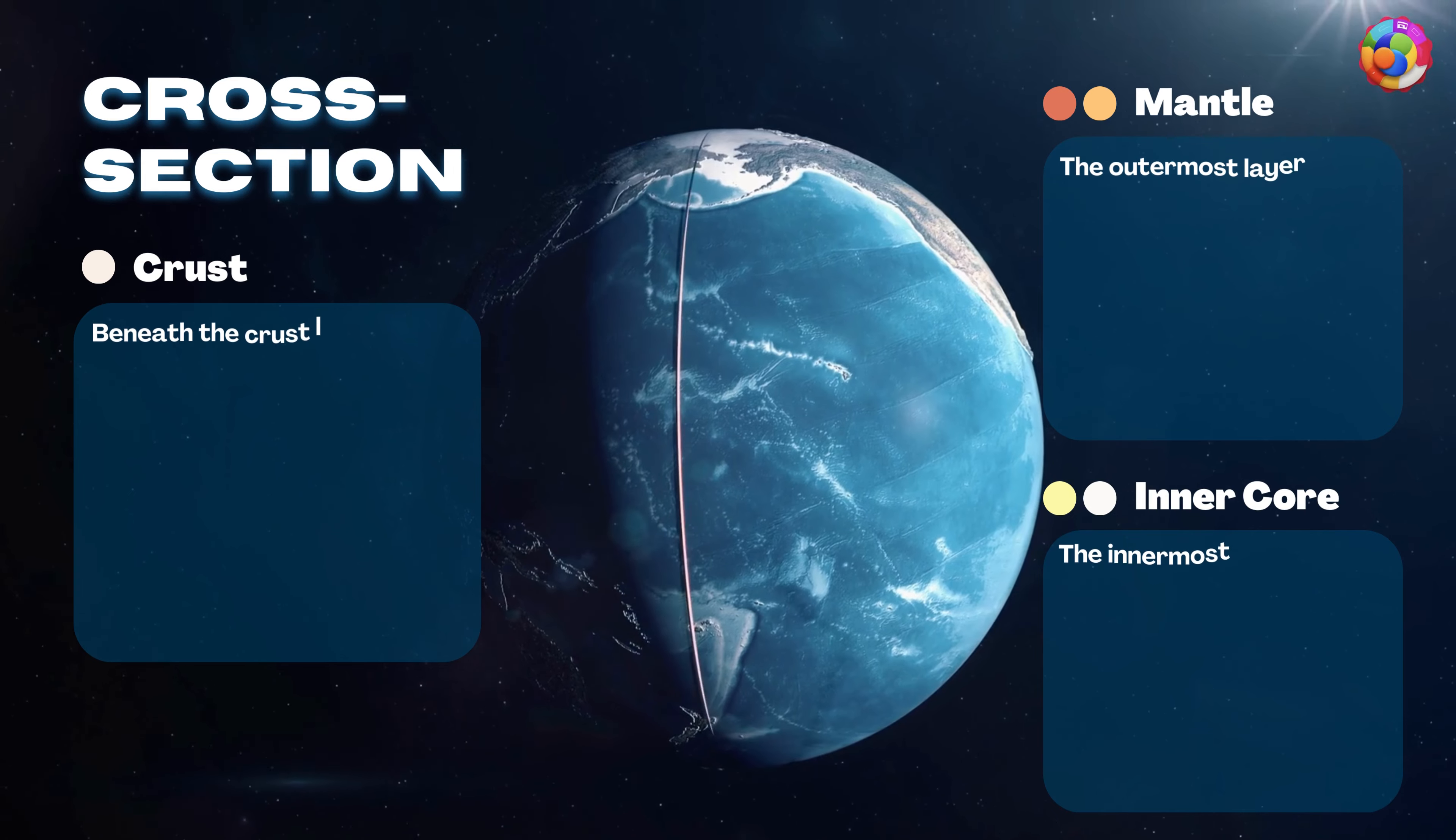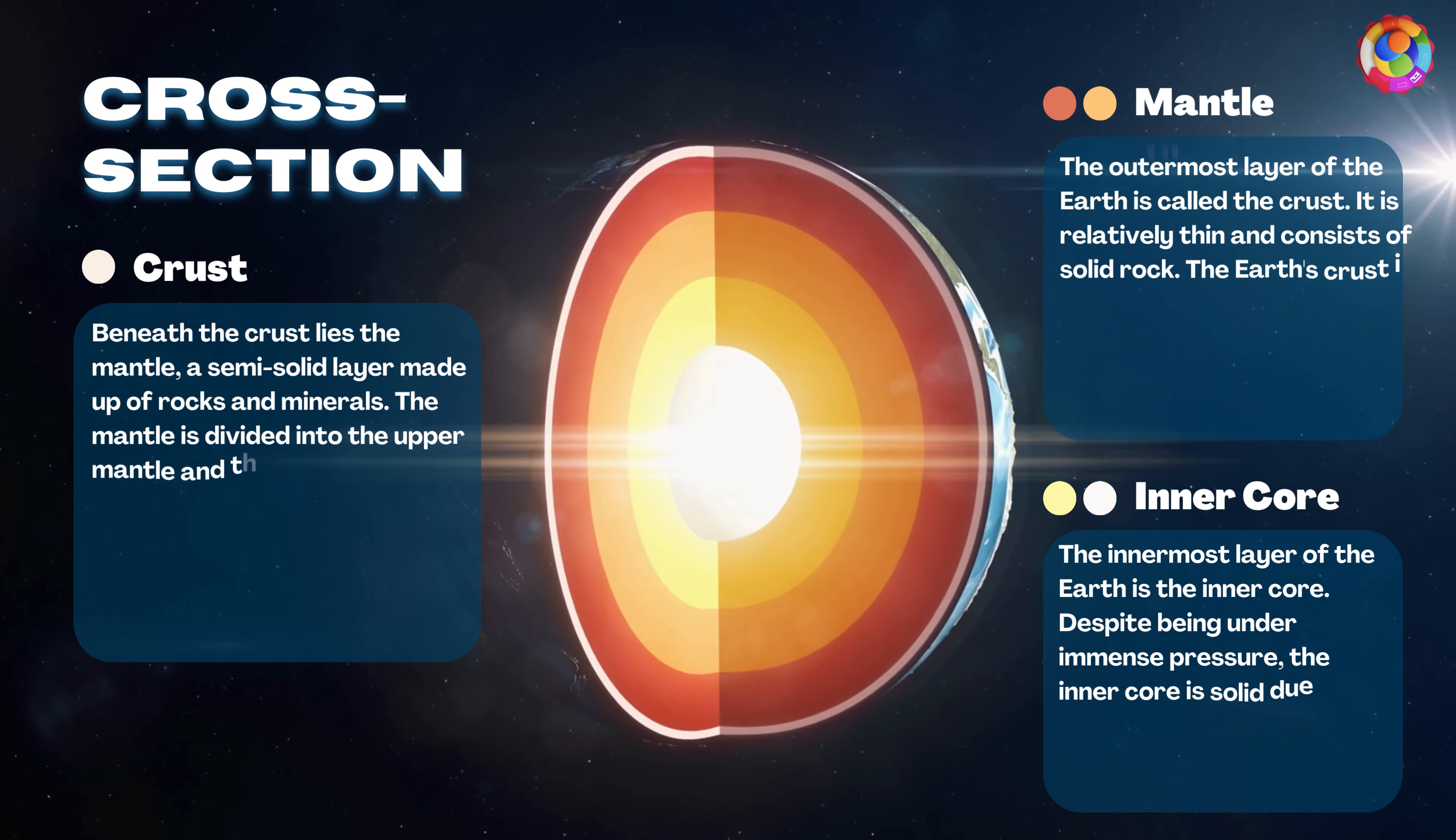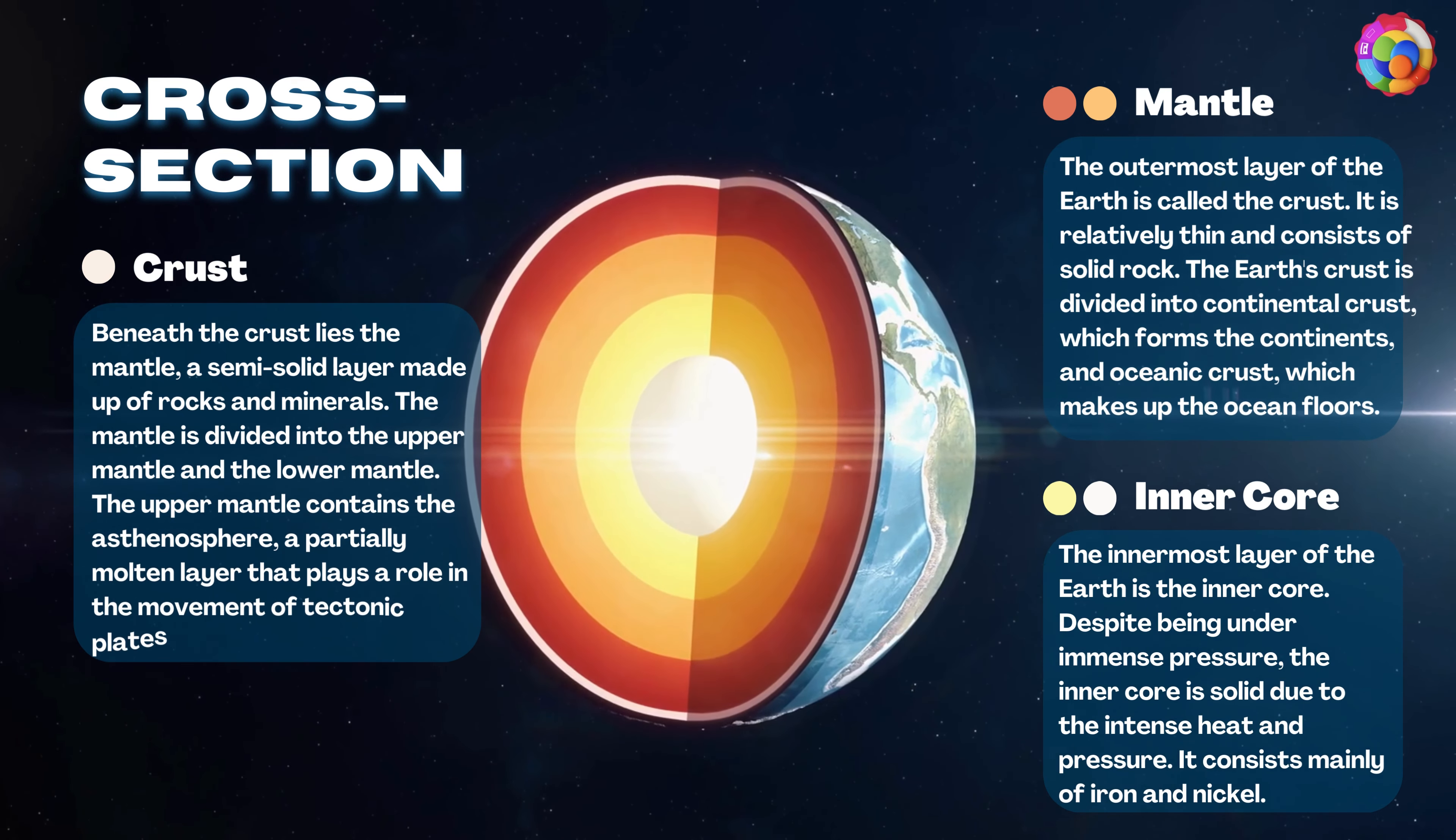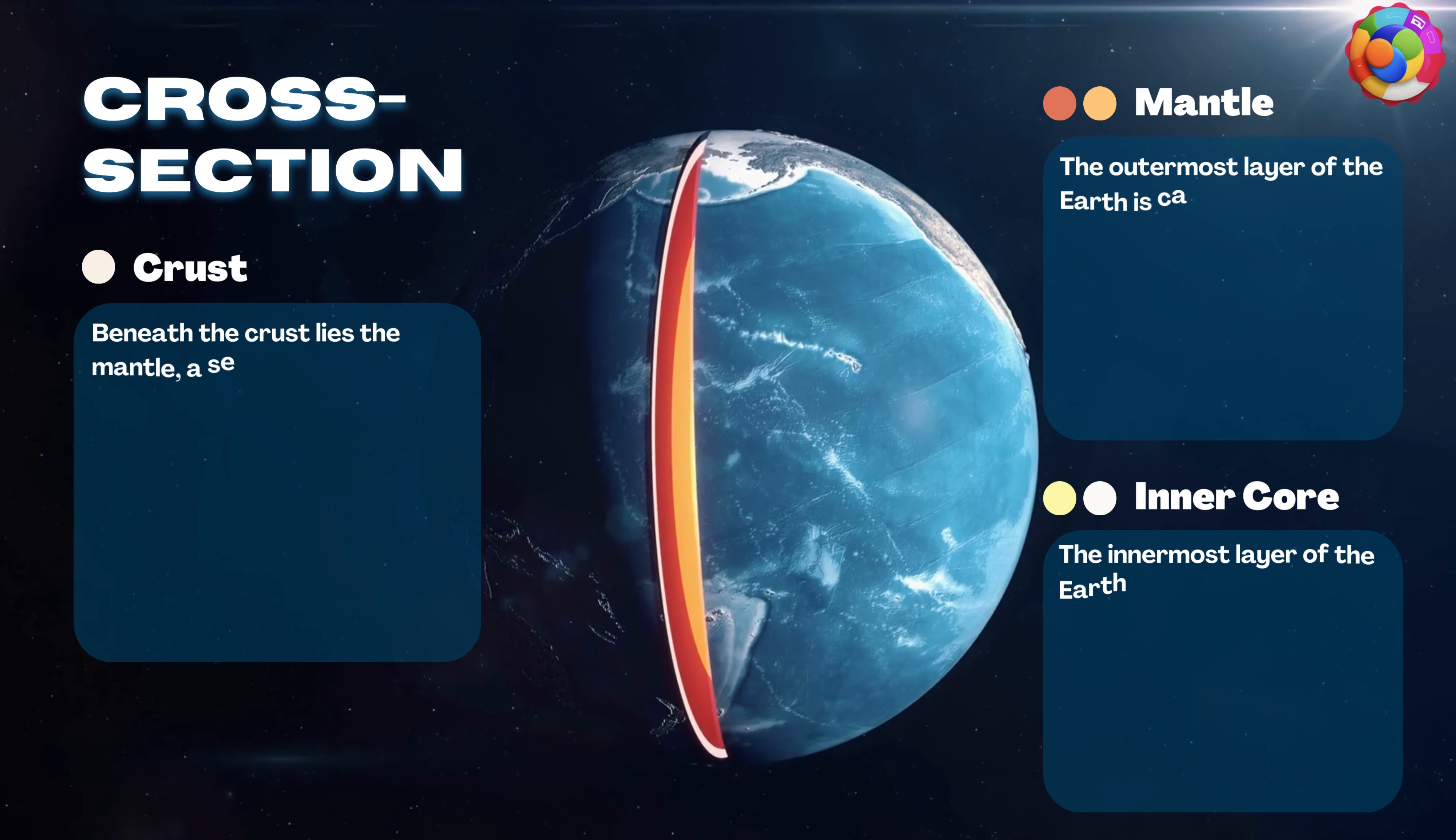Earth's cross-section. Crust: Beneath the crust lies the mantle, a semi-solid layer made up of rocks and minerals. The mantle is divided into the upper mantle and the lower mantle. The upper mantle contains the asthenosphere, a partially molten layer that plays a role in the movement of tectonic plates.